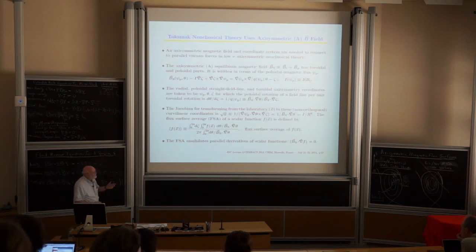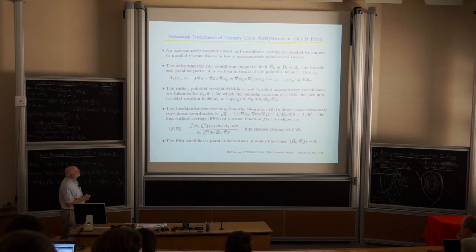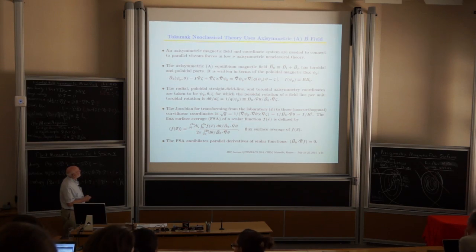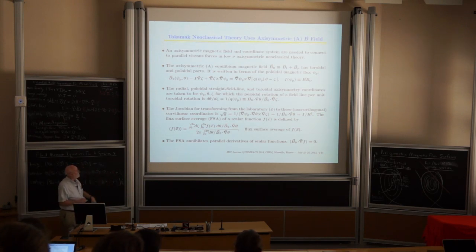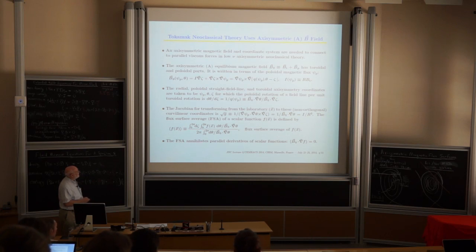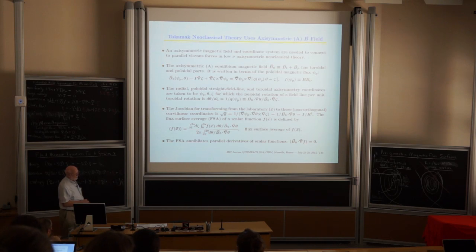We write the magnetic field in covariant-contravariant form. The flux surface average — averaging over poloidal and toroidal angles — annihilates parallel derivatives. If we take the parallel projection of our Ohm's law: B·E gives the parallel electric field. The V cross B term vanishes with B·V. The B·grad of isotropic pressure vanishes on flux surface average. So all we get is friction and viscosity along the field line.